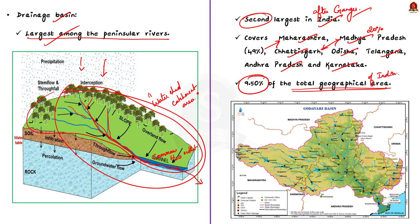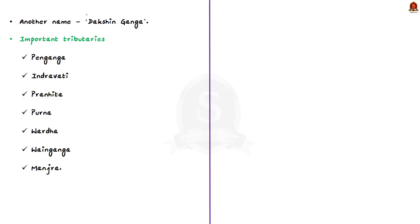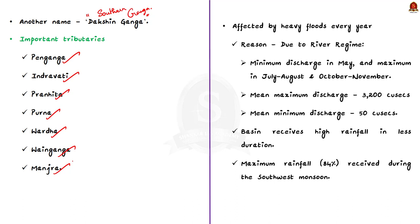Due to these features, Godavari is also known as Dakshin Ganga - meaning Southern Ganga. The important tributaries of Godavari include Penganga, Indravati, Pranita, Poorna, Wardha, Wainganga, and Manjira. The lower reaches of Godavari are subjected to heavy floods, as seen in this news article.